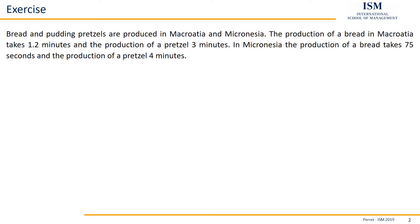Here we have bread and pretzels, which are produced in Macroasia and Micronesia. The production of a bread in Macroasia takes 1.2 minutes and the production of a pretzel 3 minutes. In Micronesia, the production of a bread takes 75 seconds and the production of a pretzel 4 minutes.